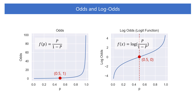In other words, when the probability p of an event occurring and the probability 1-p of not occurring are reversed, the log odds value has the same absolute value but the sign is reversed. This property is important in logistic regression.